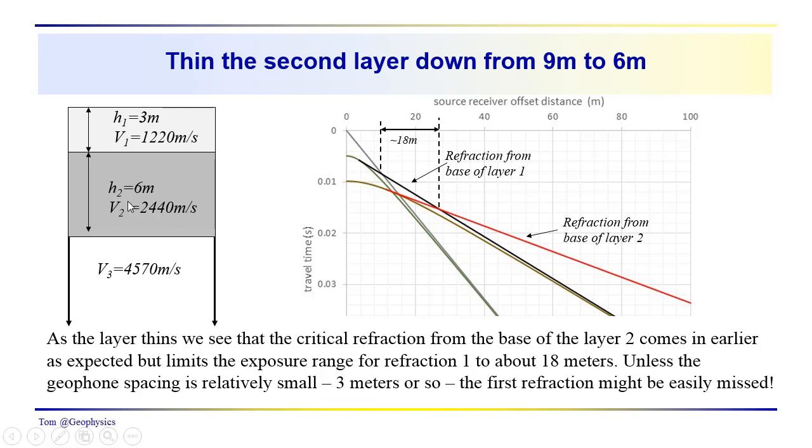But if we start to thin this layer, so we thin the thickness of the second layer from 9 meters to 6 meters, you can see that the extent of the critical refraction from the base of layer 1 becomes restricted to about 18 meters in a distance source receiver offset. So unless we had geophones at 3-meter, 5-meter intervals, very likely we might be in this region where we might miss this refractor. But at least as we've shown it here in this data, we would see both refraction events, the refraction from the base of layer 1, the refraction from the base of layer 2.